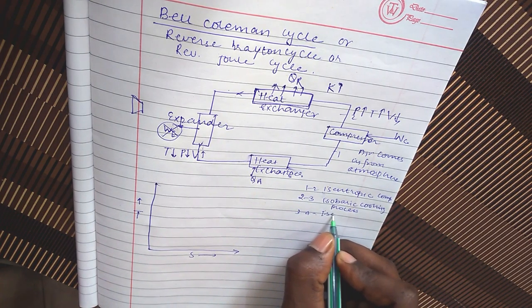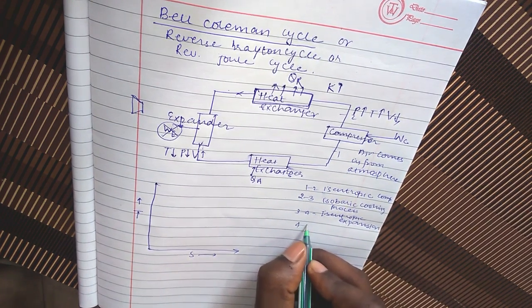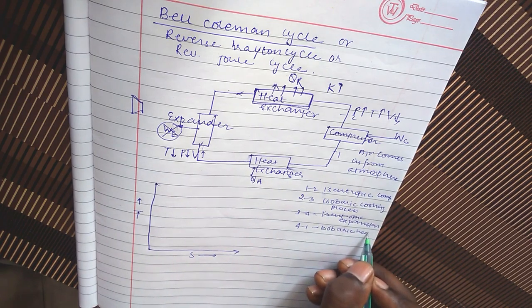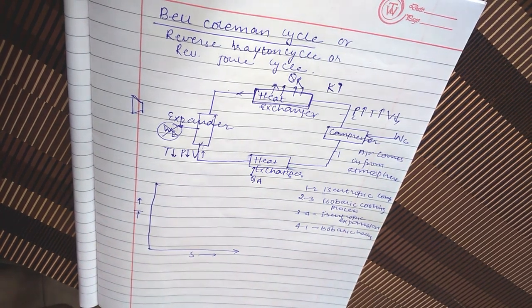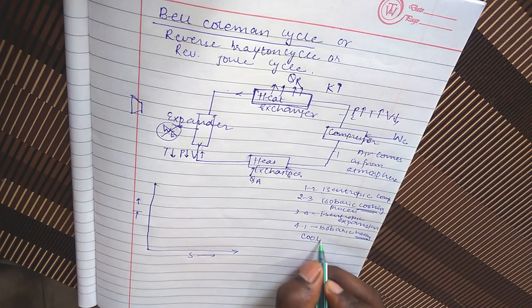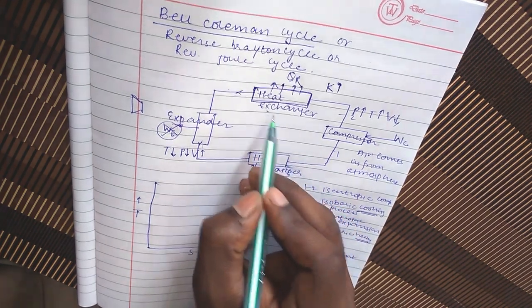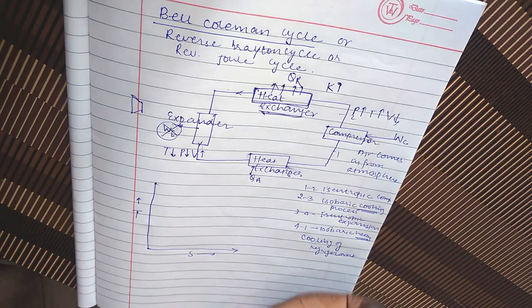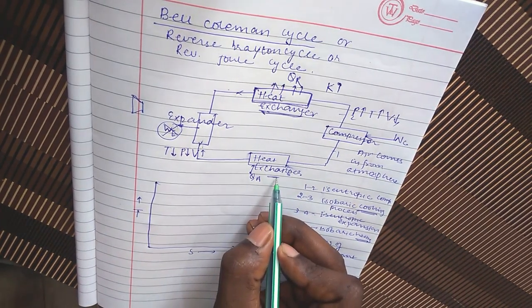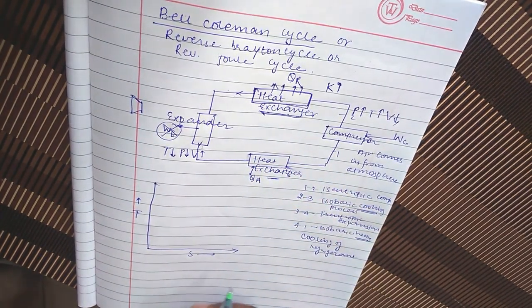Three to four is isentropic expansion. Four to one again is isobaric heating. What is the meaning of cooling and heating over here? Cooling means cooling of refrigerant in the heat exchanger. In this heat exchanger refrigerant is cooled, and in this process, in this heat exchanger, refrigerant is heated. So it is called heater and it is called cooler sometimes.